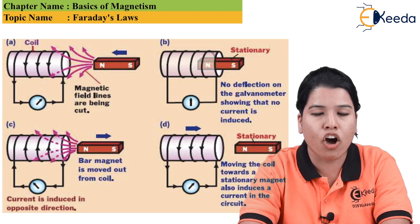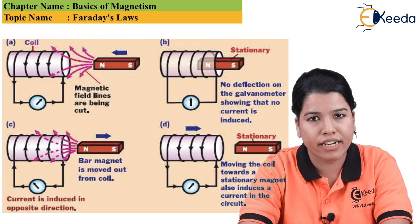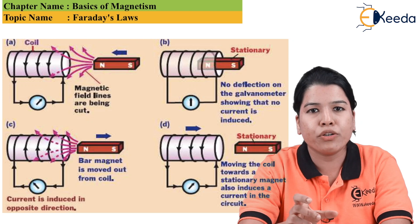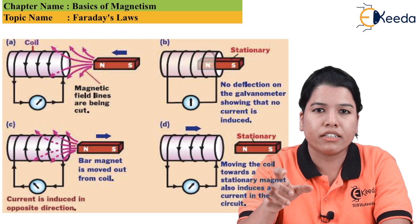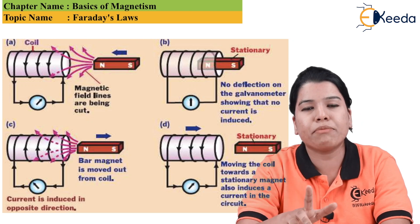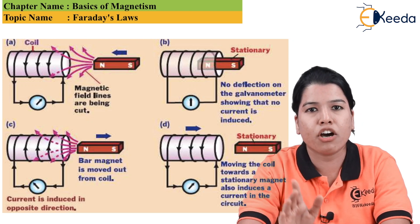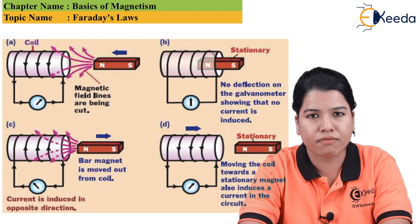Faraday's second law states that the EMF induced in the conductor is directly proportional to the rate of change of flux.